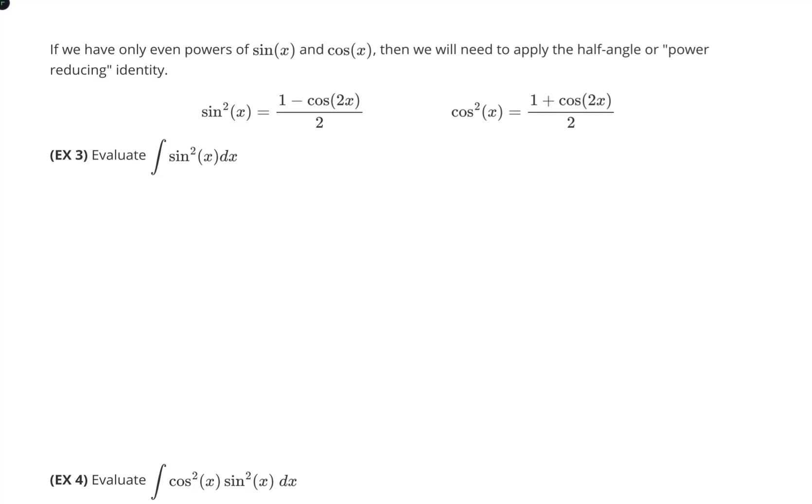So what will we do if we don't have any odd powers of sine or cosine? It's entirely possible that we have only even powers of these functions. Well in that case, we would need to reduce their degree using the power-reducing identities. Those formulas I've provided here are very similar to one another and both based off of the double angle formula for cosine. Essentially, sine squared of x could be written as 1 minus cosine 2x divided by 2, and cosine squared could be written as 1 plus cosine 2x divided by 2.